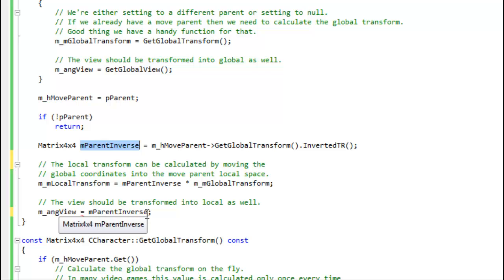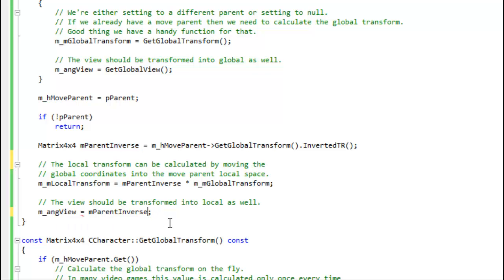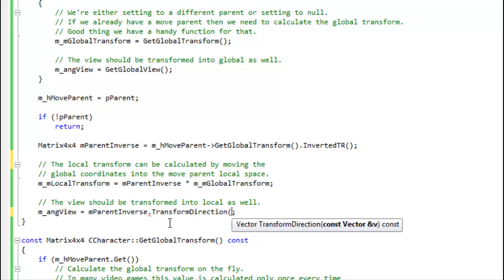But instead of saying times, no, we're now going to say transform direction, and then pass in the vector version of the view angles. That's it. If we use the regular multiplication, then we're going to get the translation part in there too, and that would be bad. We only want the direction part, so that we can remain a unit vector. So that should do it.